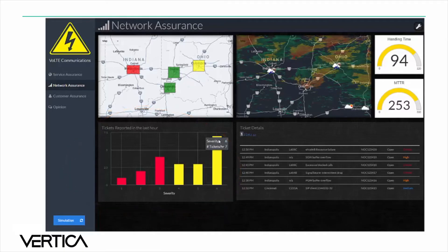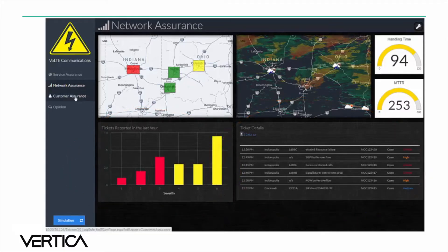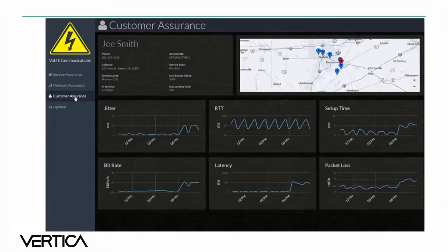On the right you can see more details about each ticket that was filed. The Customer Assurance dashboard shows detailed information about a customer named Joe Smith. We can see Joe's service level and type as well as view his calls on a map. The red dot indicates a location where a call was dropped, so maybe we want to investigate the cell tower in that area.